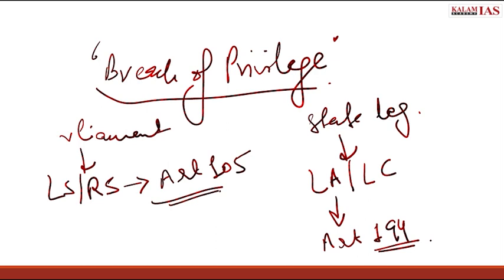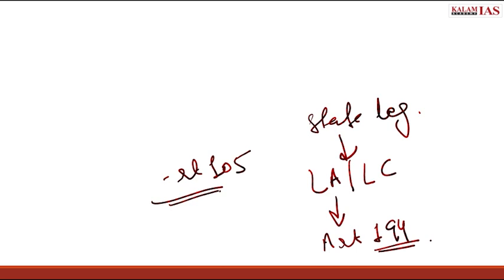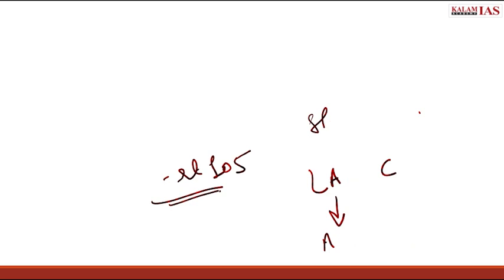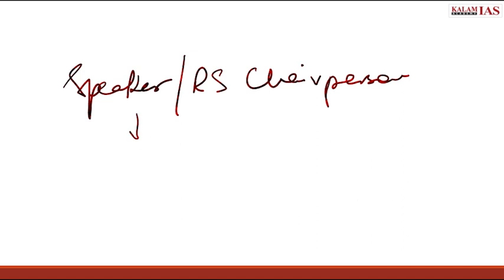Now, whenever there is a breach of privilege, it is punishable under law. The first level of scrutiny is the Speaker or the Rajya Sabha Chairperson. They decide upon the breach of privilege by themselves or by a privileges committee of the parliament.